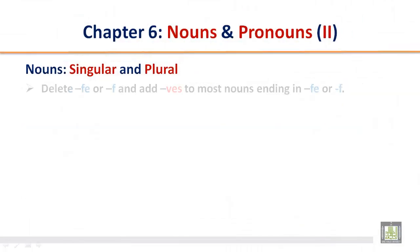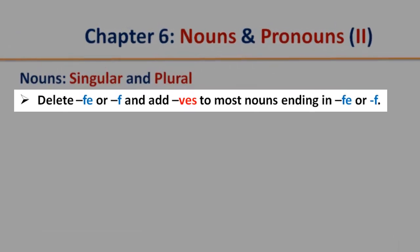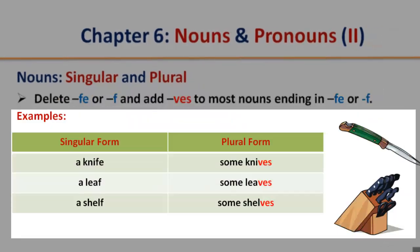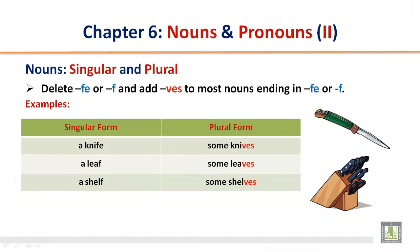Nouns, singular and plural. Delete FE or F and add VES to most nouns ending in FE or F. Singular form: a knife. Plural form: some knives. Singular form: a leaf. Plural form: some leaves. Singular form: a shelf. Plural form: some shelves. If it ends in FE or F, most of the time you delete it and add VES.